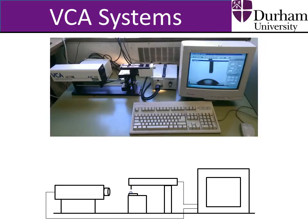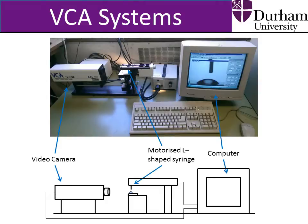Contact angle is typically measured using a video contact angle system, or VCA. The most basic system consists of a video camera and a motorised syringe that are attached to a computer, as well as a variable sample stage. A light module is also often included in case there isn't sufficient illumination. This system usually costs between 10 and 20 thousand US dollars.